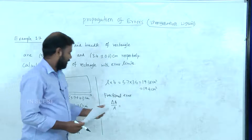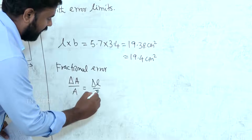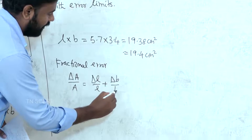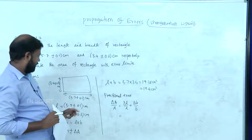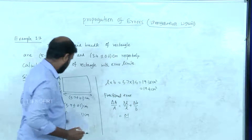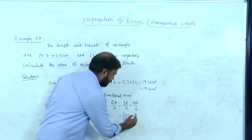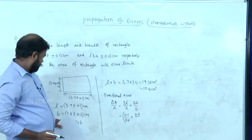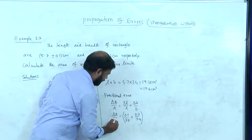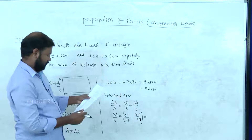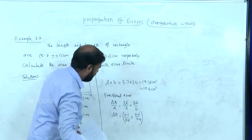Fractional error — that is del A by A. What is del A by A? It is the sum of individual fractional errors: del L by L plus del B by B. Del L is equal to 0.1, L is equal to 5.7, del B is equal to 0.2, and B is equal to 3.4. So del L is equal to 0.2 for this example — we will get straight away the absolute error.